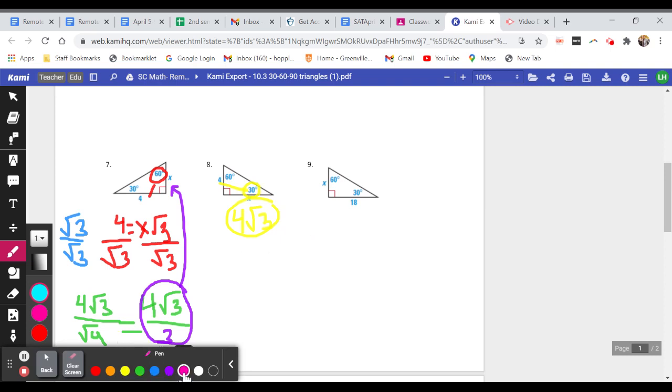For number nine, I'm given the side directly across from the 60 degree angle and it's 18. So this is a lot like number seven. I'm given a whole number and I need to set it equal to x times the root of three in order to figure out what x is. So I'm going to do that again. Remember, in order to get x by itself, this is being multiplied. So to undo multiplication, you need to do division. So divide both sides by the root of three.